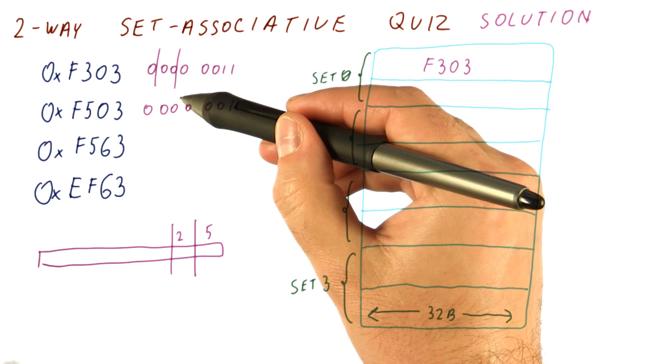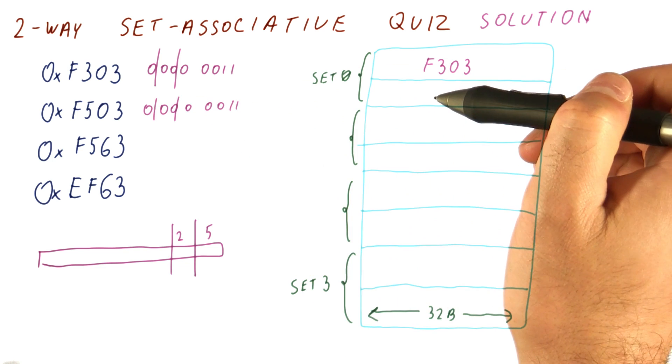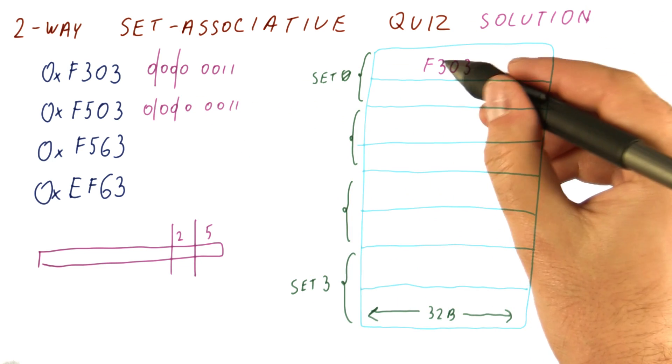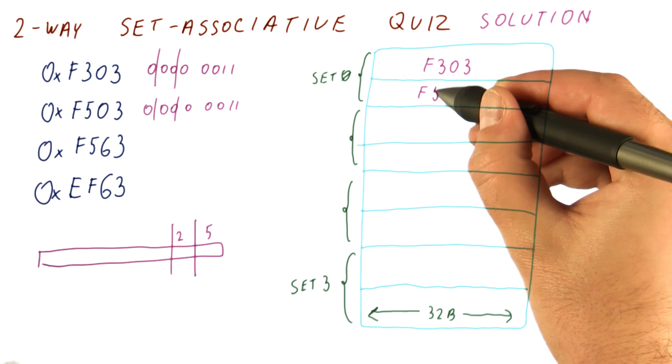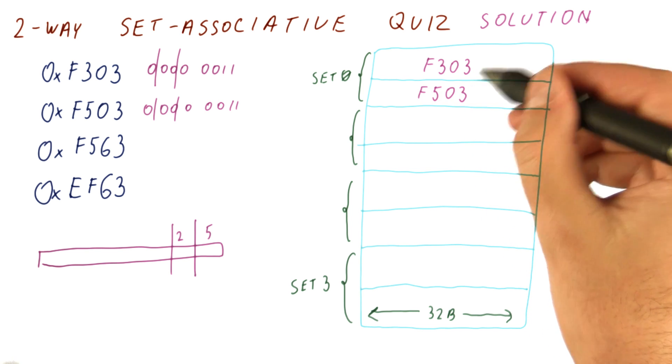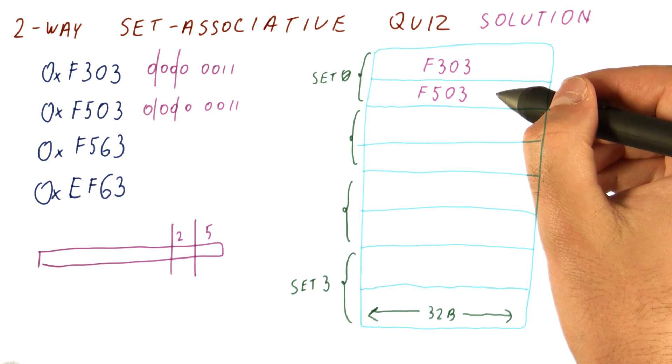Next one is F503. It maps to the same set, but this set now has two places. So we can actually put F503 in the other line in that set.